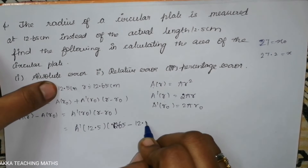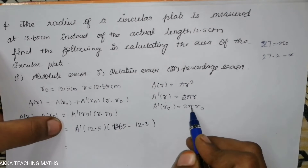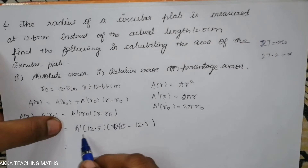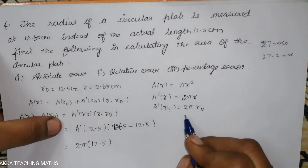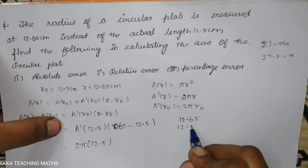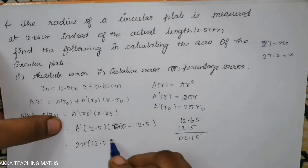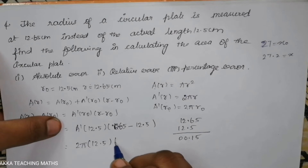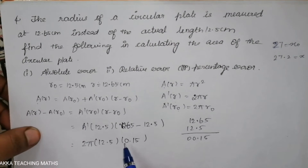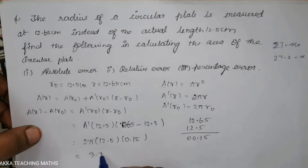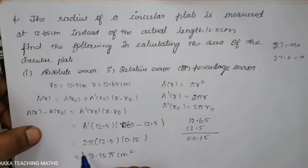The value of r0 is 12.5. So A'(r0) = 2π r0 = 2π × 12.5. Subtracting: r − r0 = 12.65 − 12.5 = 0.15. So the approximate value is 2 × 12.5 × 0.15 × π = 3.75π cm square.